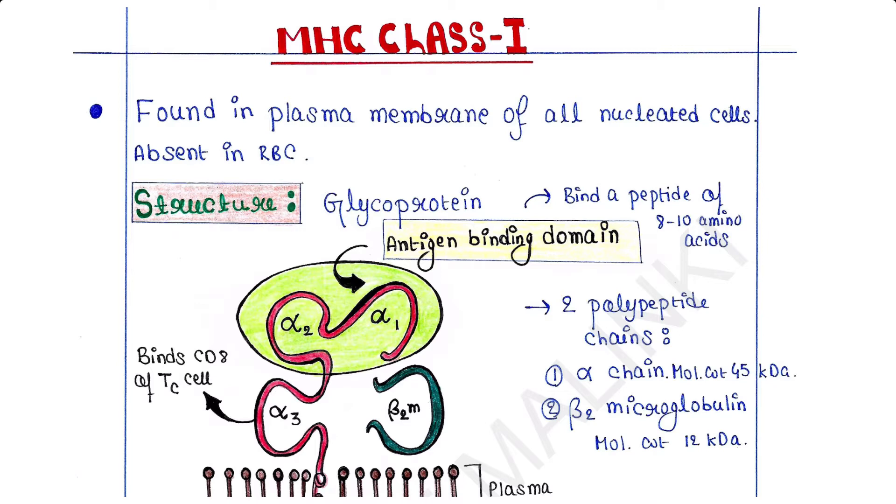Class 1 MHC molecules are found in the plasma membrane of all nucleated cells in our body. Therefore, it is absent only in RBC or red blood cells because red blood cells lack nucleus.